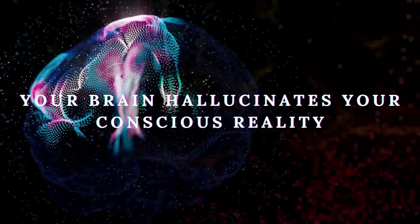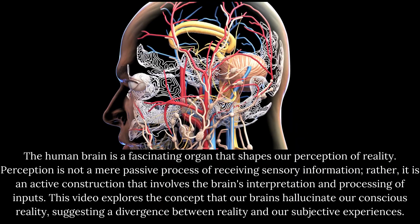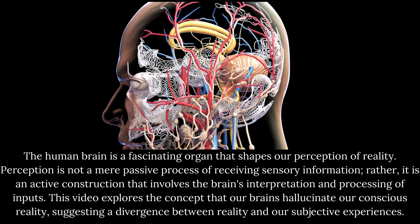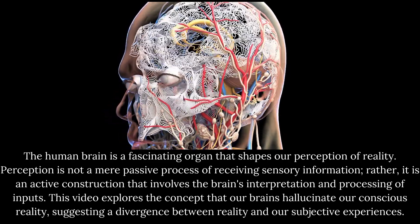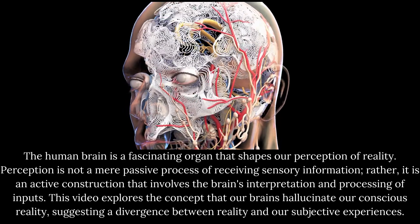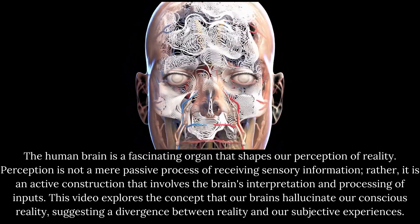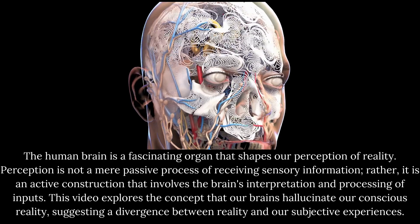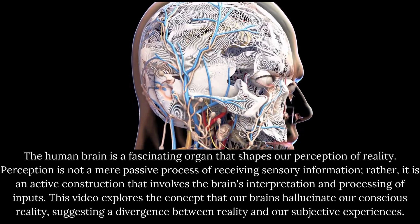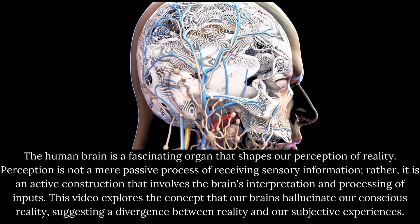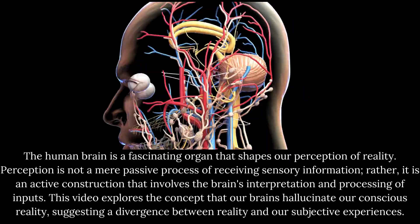Your brain hallucinates your conscious reality. The human brain is a fascinating organ that shapes our perception of reality. Perception is not a mere passive process of receiving sensory information; rather, it is an active construction that involves the brain's interpretation and processing of inputs. This video explores the concept that our brains hallucinate our conscious reality.